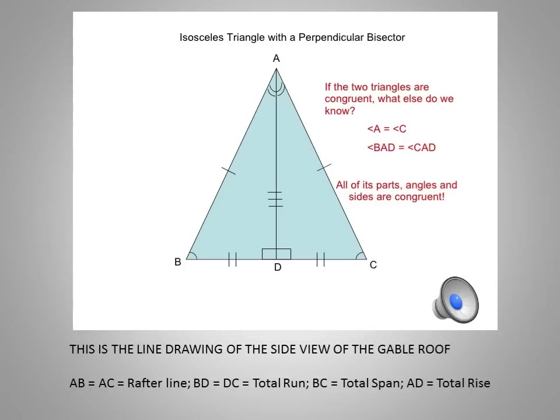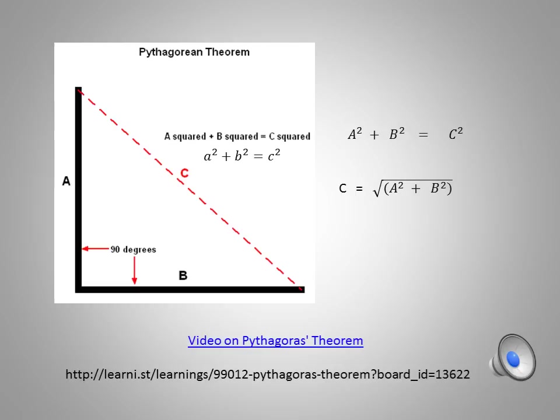If you were to take a cut through a gable roof and look at the side view, you would actually see an isosceles triangle. The sloping sides of the triangle would be the slopes of the roof, and both slopes are the same angle, therefore the angles at the base are the same. So when we look at a roof, we're only going to deal with half of the triangle in order to calculate the common rafter.